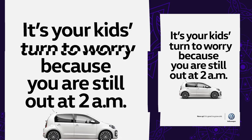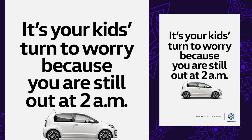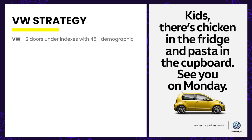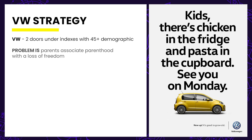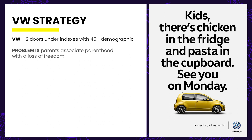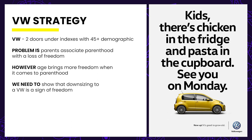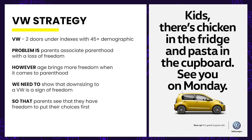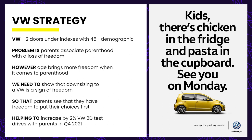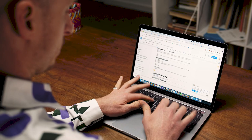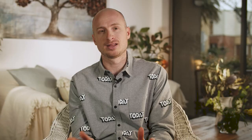Let's look at a quick example for VW. The business problem was that two-doors under-index with the 45-plus demographic. The consumer problem was that parents associated parenthood with a loss of freedom. The insight was that age brings more freedom when it comes to parenthood. So the message was to show that downsizing to a VW is a sign of freedom, helping parents see that they have freedom to put their choices first — and helping reach the business goal of increasing VW's two-door test drives with parents by 2% in Q4 2021. I've got a link to a free presentation with 10 more examples of nested strategy in the description.